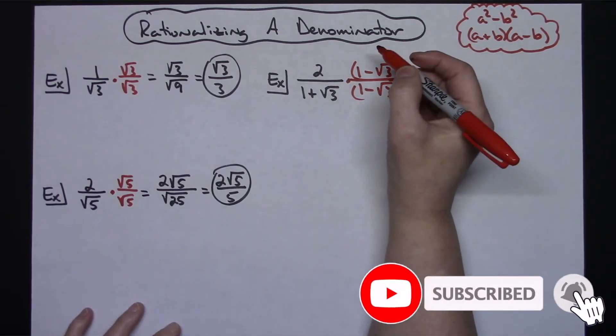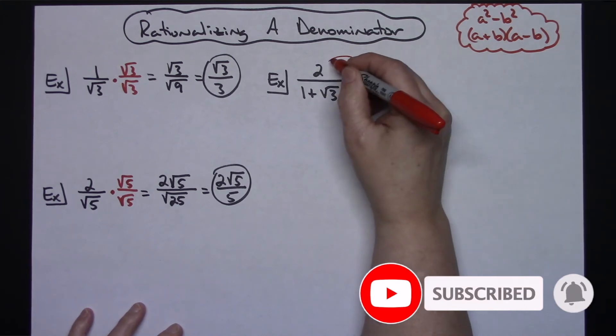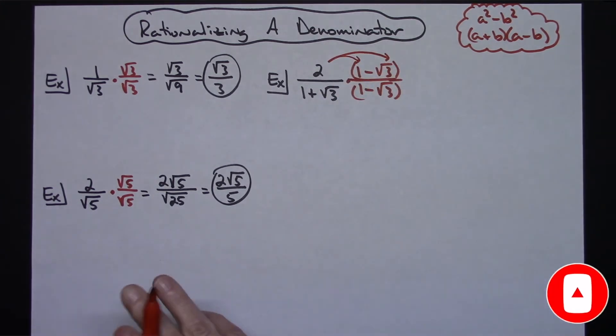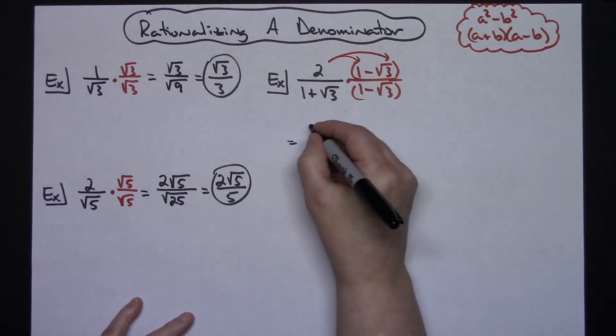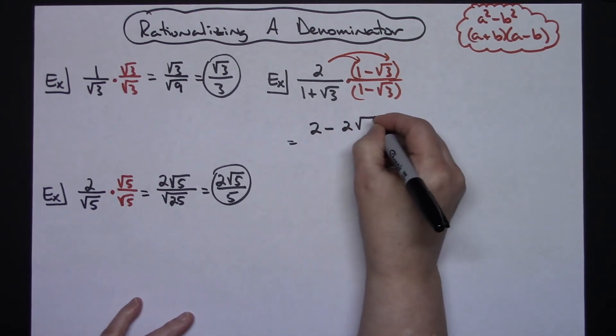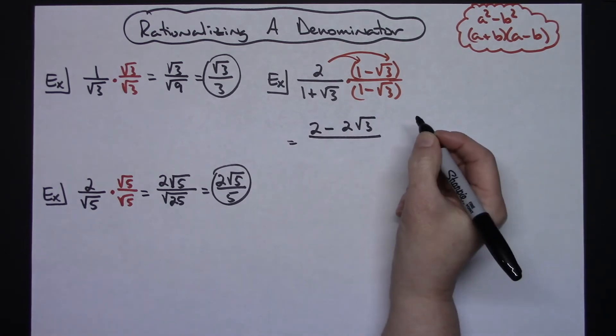On top, it's going to be kind of straightforward. I've got to distribute because I did multiply by a binomial. So that numerator is going to be a 2 minus 2 square root of 3.